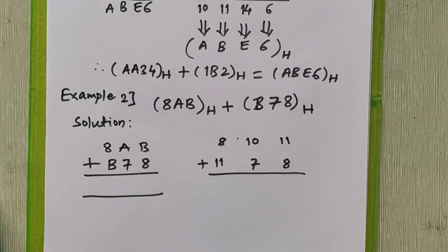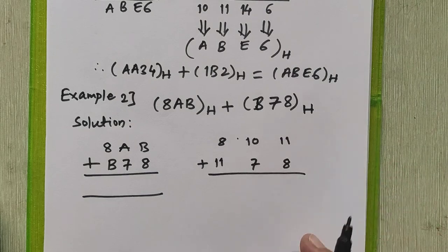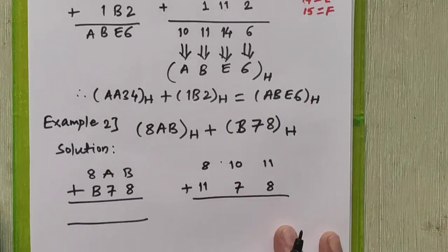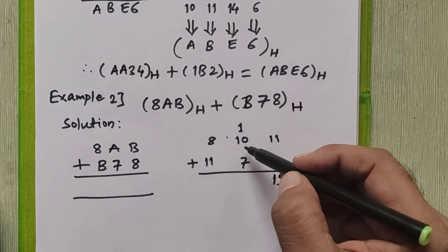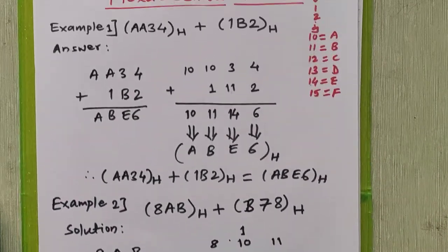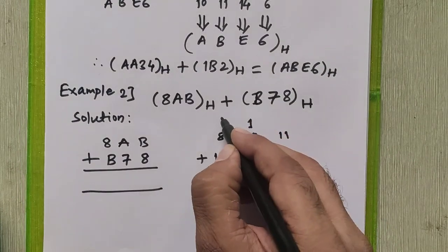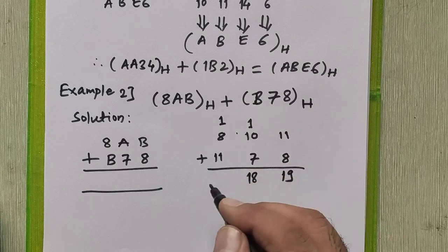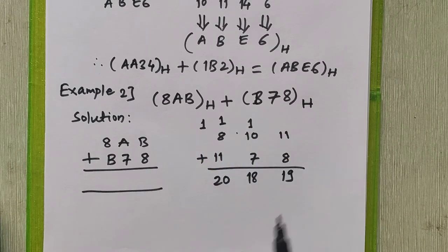Now if we add these two numbers: 11 plus 8 is 19 in decimal, which exceeds the last valid digit 15, so we write 19 and generate a carry. Then 10 plus 1 carry is 11, plus 7 is 18, which is also greater than 15, so we generate a carry again. Now 8 plus 1 carry is 9, plus 1 carry is 10, plus 10 is 20. So we write 20 here and a carry is generated for the next step. Since there are no further digits, we copy the carry as it is.